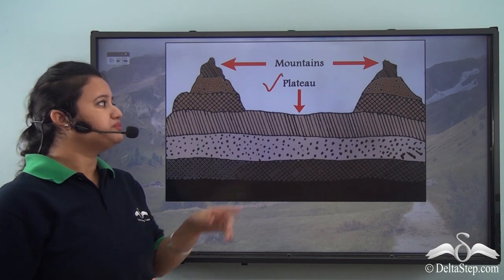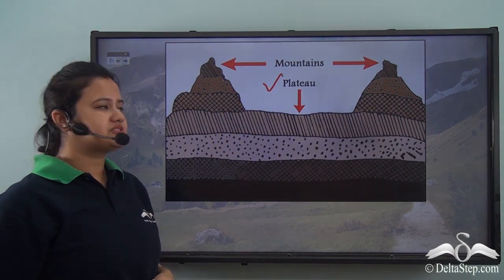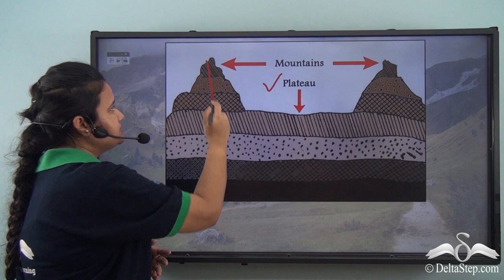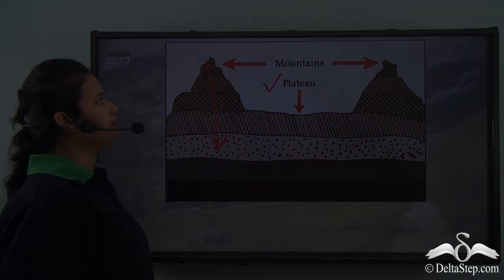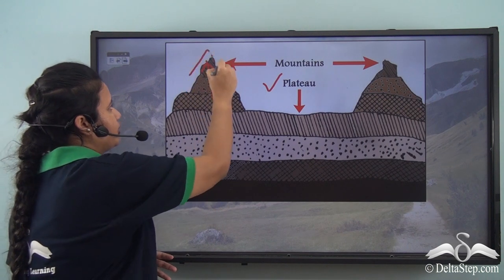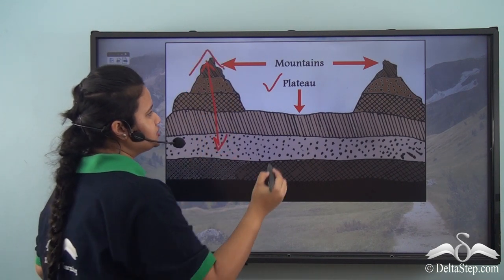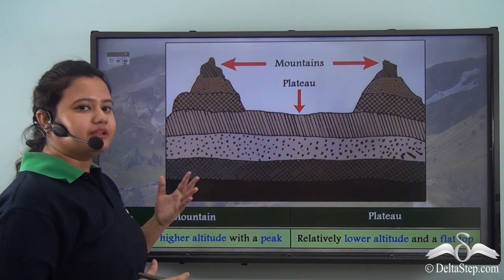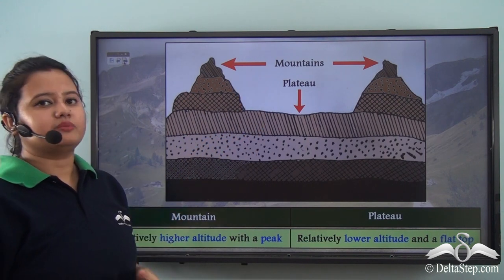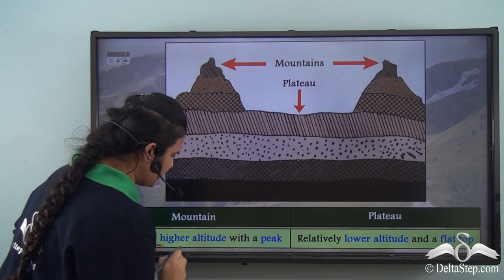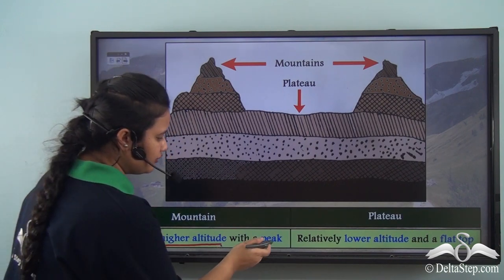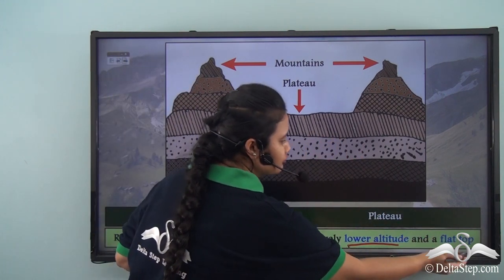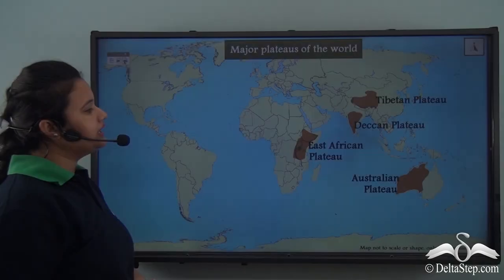Mountains are more elevated — that is, mountains have higher elevation than plateaus. Also, mountains have a peak or a summit, whereas plateaus have a flat top. So the major difference is that mountains have relatively higher altitude and a peak, whereas plateaus have relatively lower altitudes and a flat top.